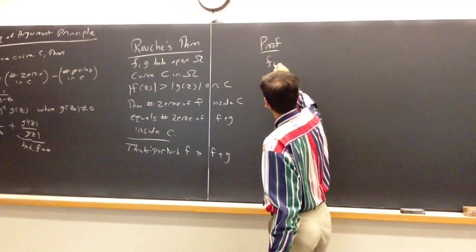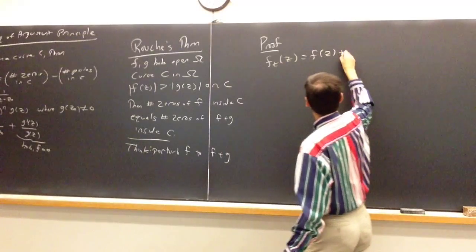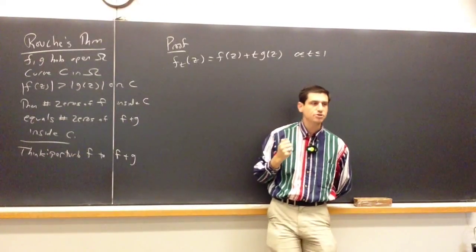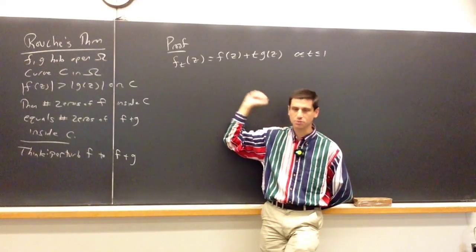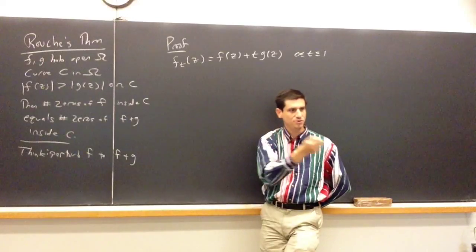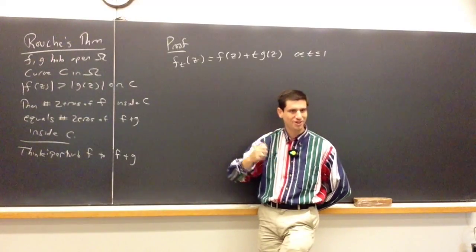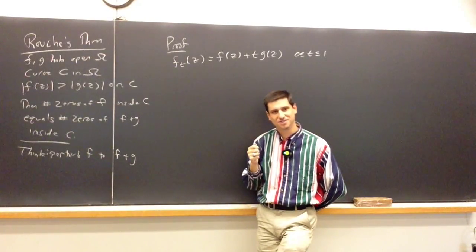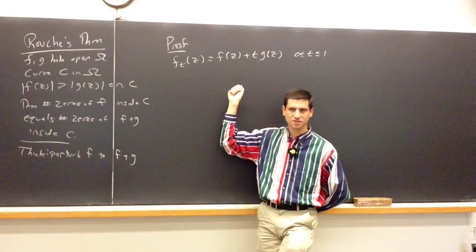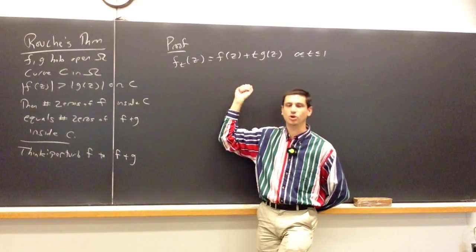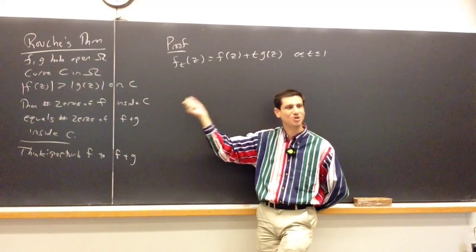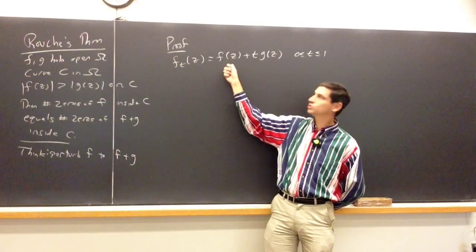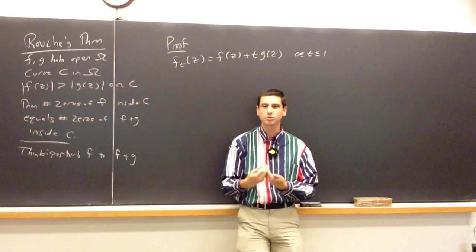The proof follows from this observation: we're perturbing f to get to f + g. Consider a family of functions f_t(z) = f(z) + t·g(z), where 0 ≤ t ≤ 1. You may have seen something like this in topology — deforming one curve to another — or in calculus of variations. At t = 0 we're at f; at t = 1 we're at f + g. This allows us to continuously move from one to the other. Clearly f_t is continuous in t and in z.